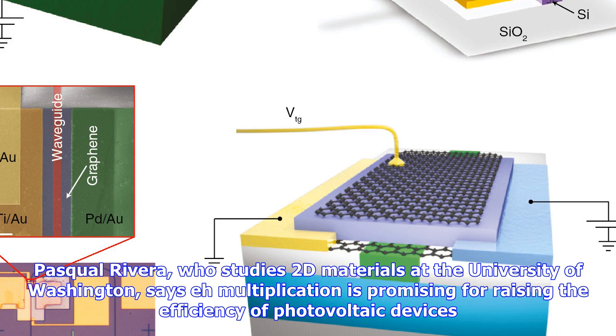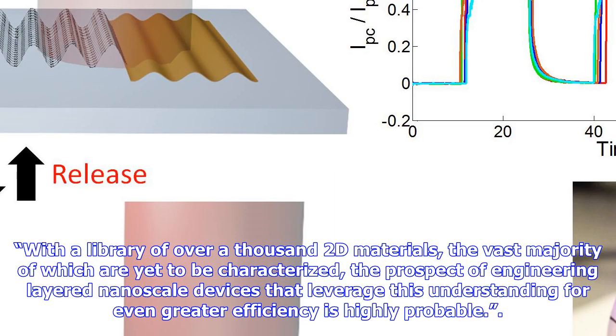Pascual Rivera, who studies 2D materials at the University of Washington, says exciton multiplication is promising for raising the efficiency of photovoltaic devices. With a library of over a thousand 2D materials, the vast majority of which are yet to be characterized, the prospect of engineering layered nanoscale devices that leverage this understanding for even greater efficiency is highly probable.